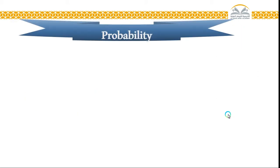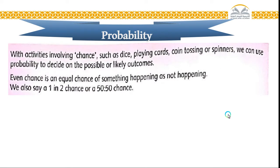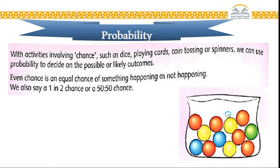Now, going for the third objective, third concept, new concept: probability. Now, with activities involving chance, such as dice, playing cards, coin tossing, or spinners, we can use probability to decide on the possible or likely outcomes.